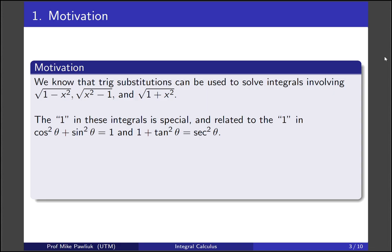And the 1 in these three things is actually special. It's coming from the 1 that's in Pythagoras, either cos squared plus sine squared equals 1, or 1 plus tan squared equals secant squared. So that 1 is special.